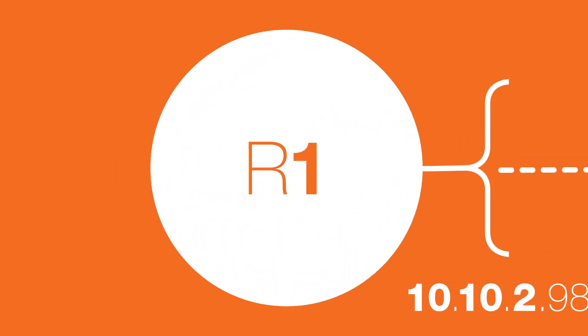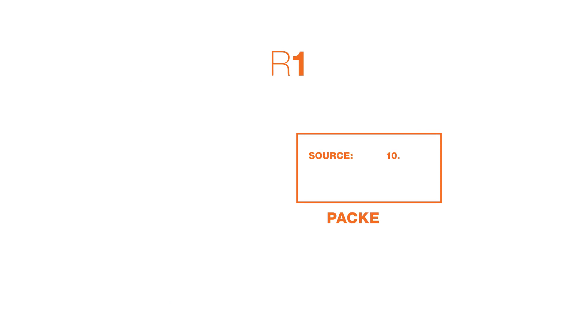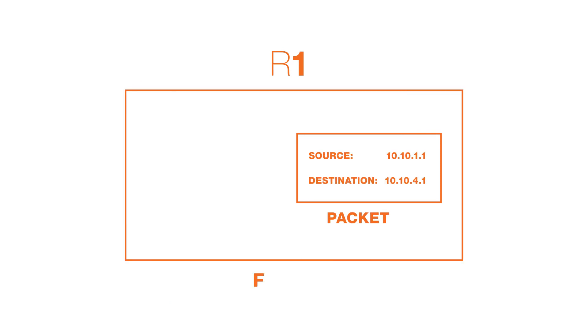R1 re-encapsulates the original packet sent from A to X with a new frame. The new source MAC address represents the right interface of R1, and the new destination MAC address represents the left interface of R2.